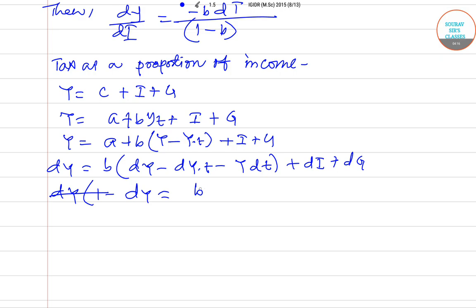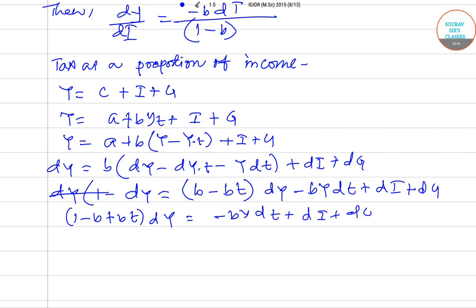So dY equals B(dY times T minus Y times dT) plus dI plus dG. So if I take this to the left side I have 1 minus B times dY minus B(Y dT minus T dY) equals dI plus dG.